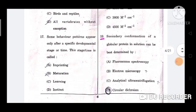Question number 19: Secondary conformation of a globular protein in a solution can be best determined by? The correct option is option D, circular dichroism.